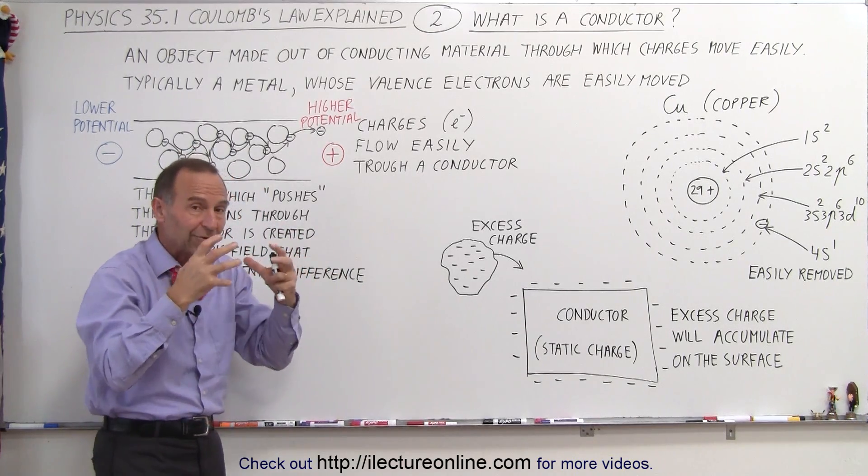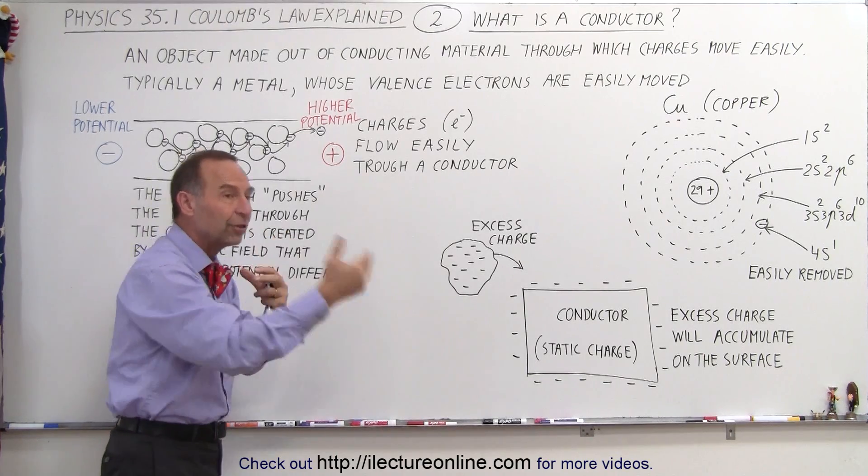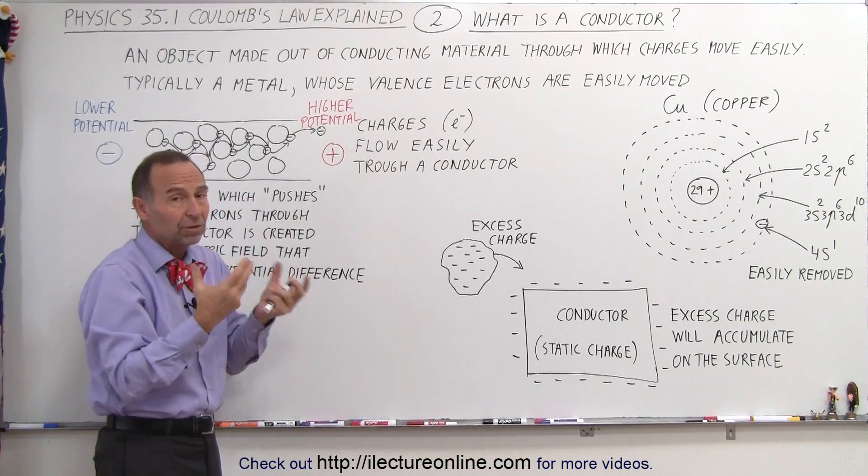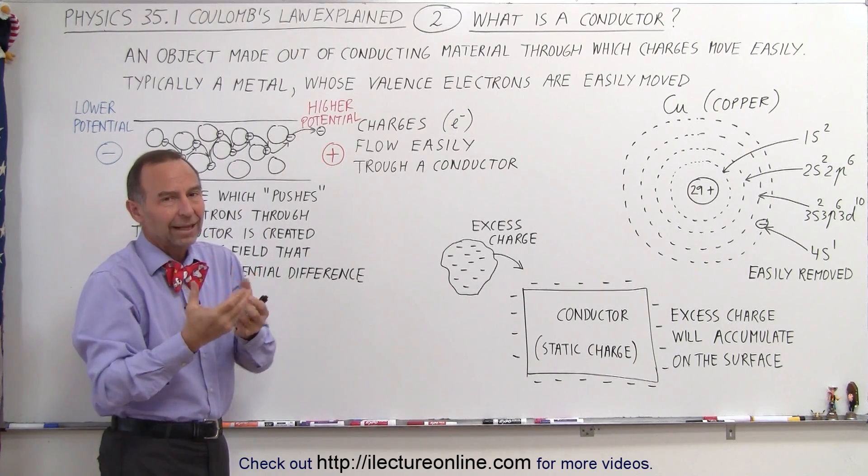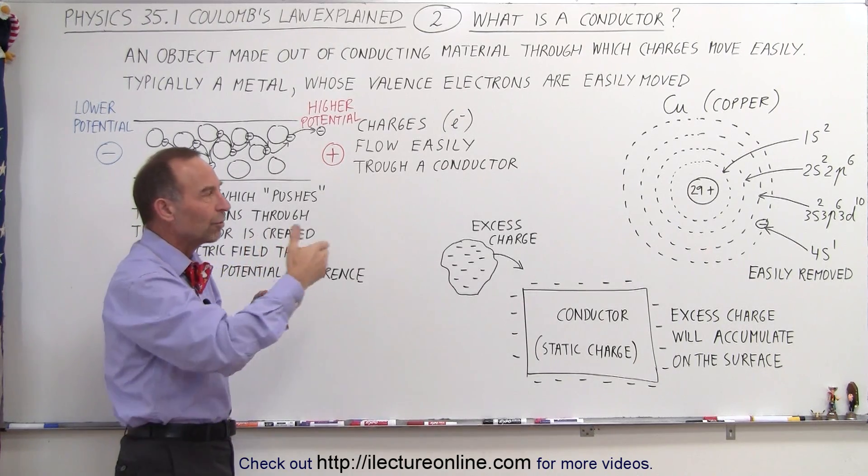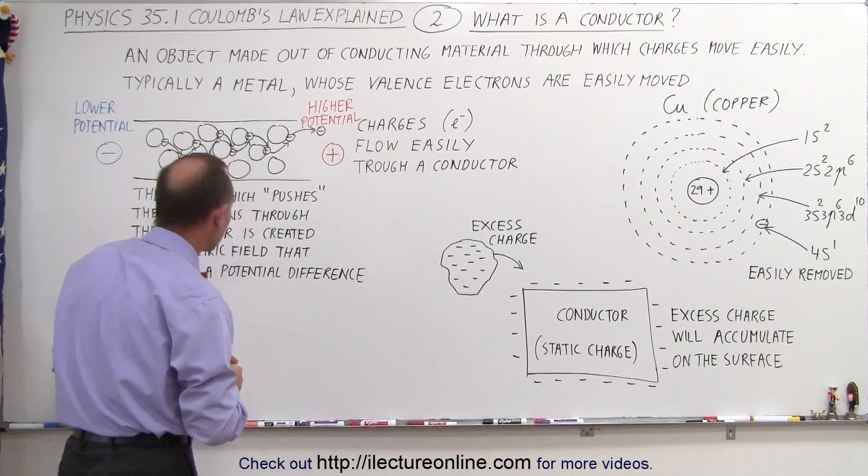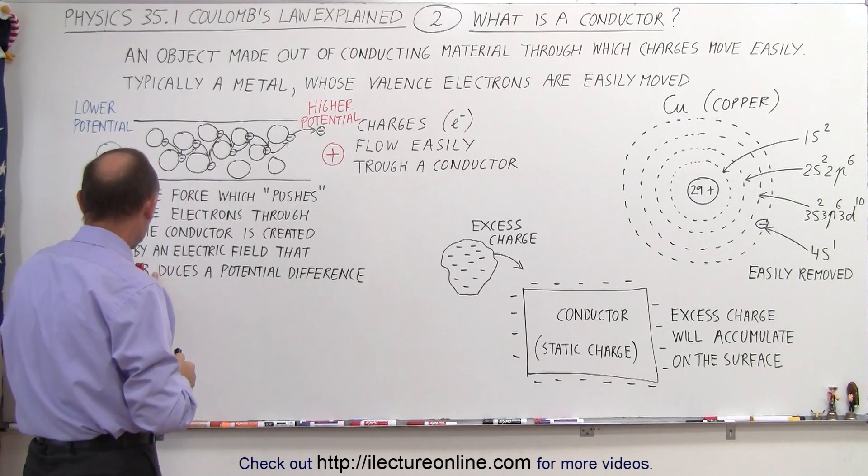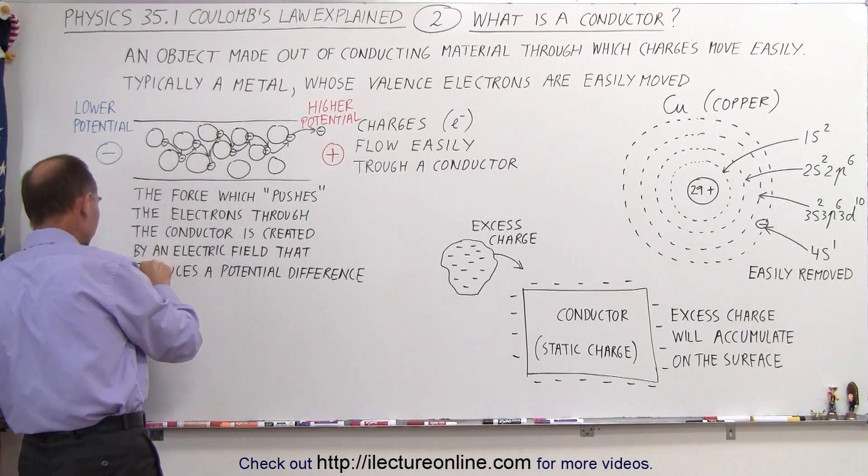If electrons are bound very tightly to the atom, it's very difficult for them to move from one atom to the next. Then the material becomes an insulator, and that means you cannot very easily move electrons through the object.